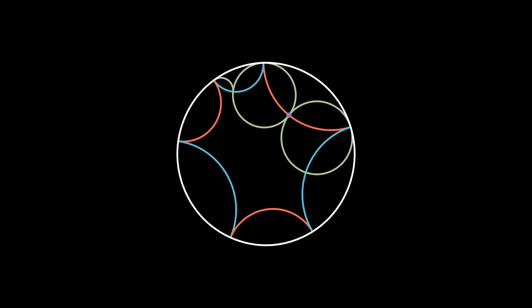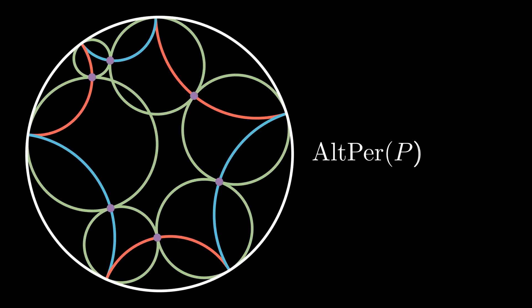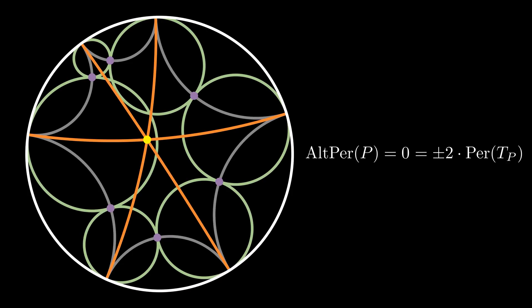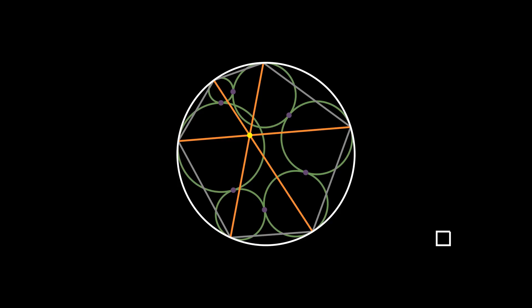Now we are finally ready to prove the seven circles theorem. Looking at an ideal hyperbolic hexagon with circles tangent to the large circle such that adjacent circles touch at a single point, and taking a look at the alternating perimeter of this hexagon, we notice that the hexagon segments in the circles cancel out. Therefore, the alternating perimeter is zero. So the perimeter of the triangle in the middle is also zero, using the equality we just proved. Thus the main diagonals of the hexagon must meet at a single point. All that's left is to perform the transformation from the Poincaré model back to the Klein model — as mentioned before, the diagonals continue to run through a single point. This corresponds exactly to the scenario from the original seven circles theorem, which we have thus proved. To be continued...